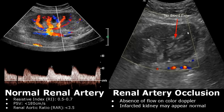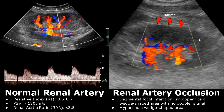The first case is renal artery occlusion. Color Doppler is applied here but there is no blood flow noted inside the kidney, which means there is renal artery occlusion. This leads to an infarcted kidney. An infarcted kidney may appear normal on ultrasound. This is an image of a segmental focal infarction — no Doppler signal is found here, indicating an occlusion. A wedge-shaped hyperechoic area is seen.